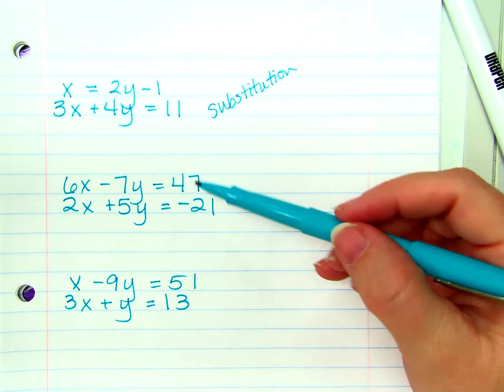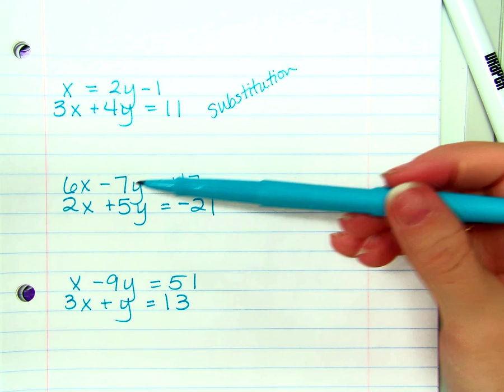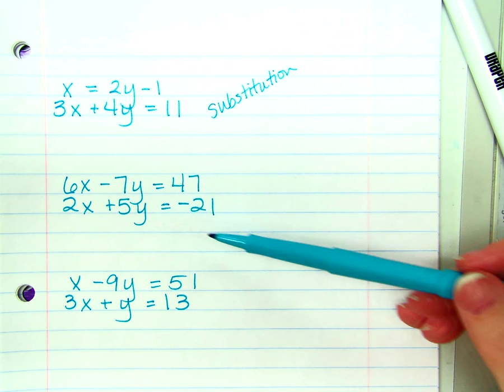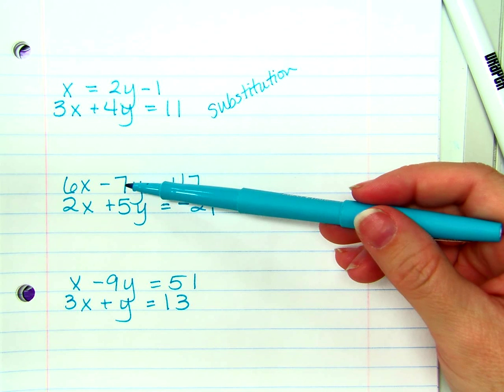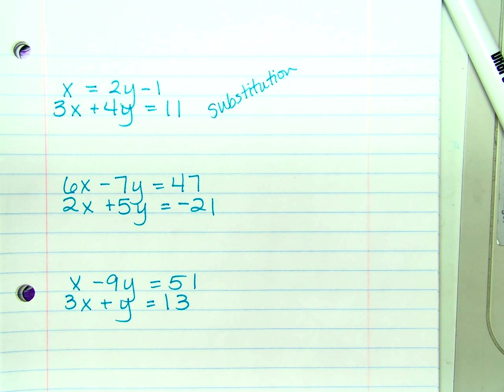Likewise, in the second equation right here, the second system, probably not by graphing. I'd have to divide everything by a negative 7 here. I'd have to divide everything by a 5 here. It's just not conducive to making graphing the easiest way to solve it.